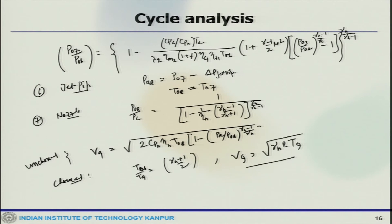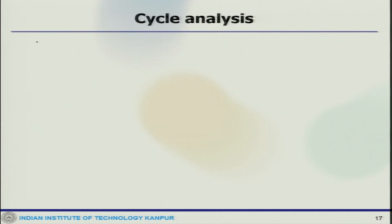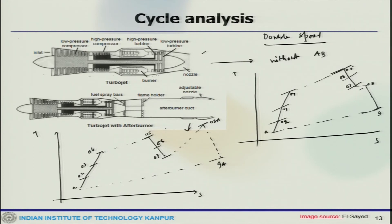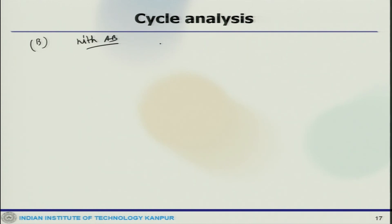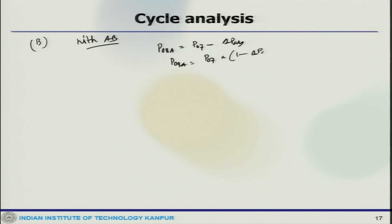That is the case without afterburner. The second case is with afterburner. The same treatment applies up to and including the LPT calculations. After the LPT, there is a pressure loss in the afterburner: P_08A equals P_07 minus delta_P_AB, or P_07 times (1 minus delta_P_AB percentage).